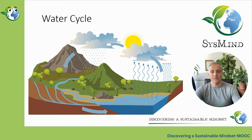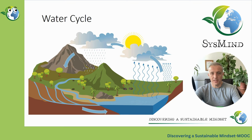When water in lakes, rivers, or the ocean is heated by the sun, it evaporates and turns into steam or vapor.